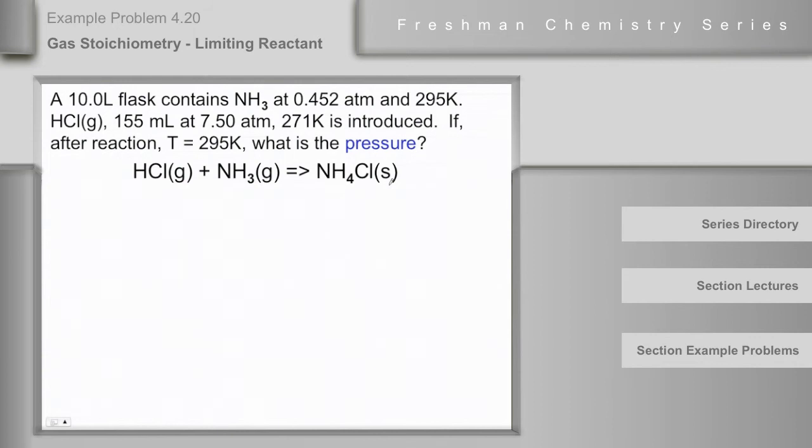So if there is any pressure at the end, what will it come from? Any unreacted HCl or ammonia. Okay, so this is kind of a limiting reactant problem.